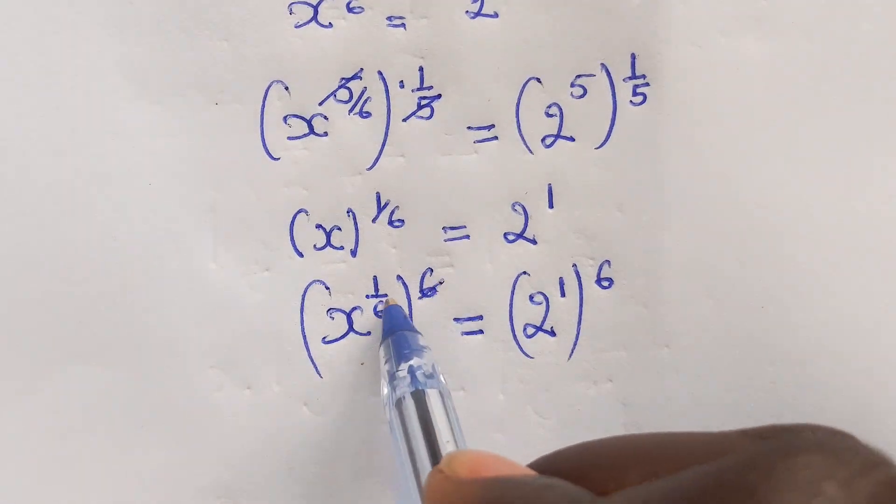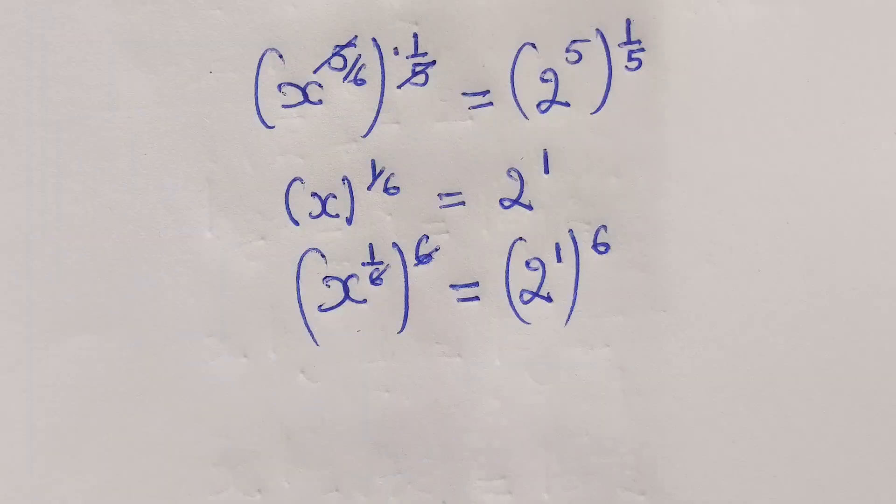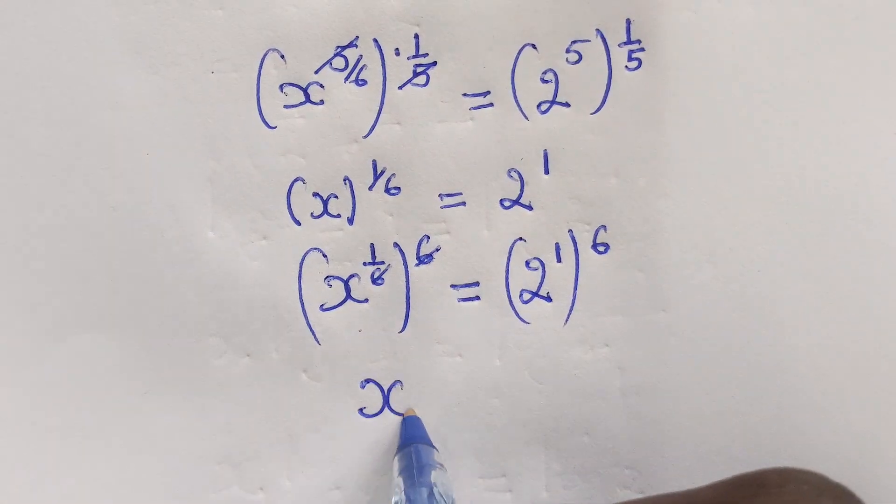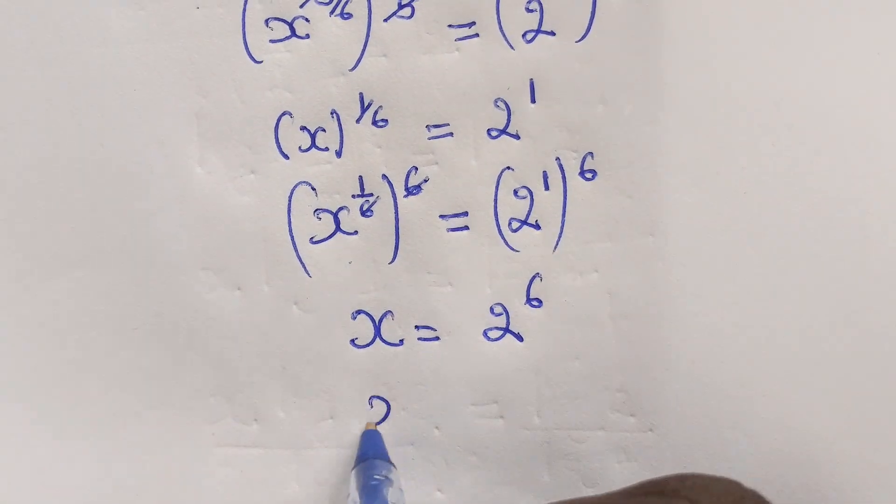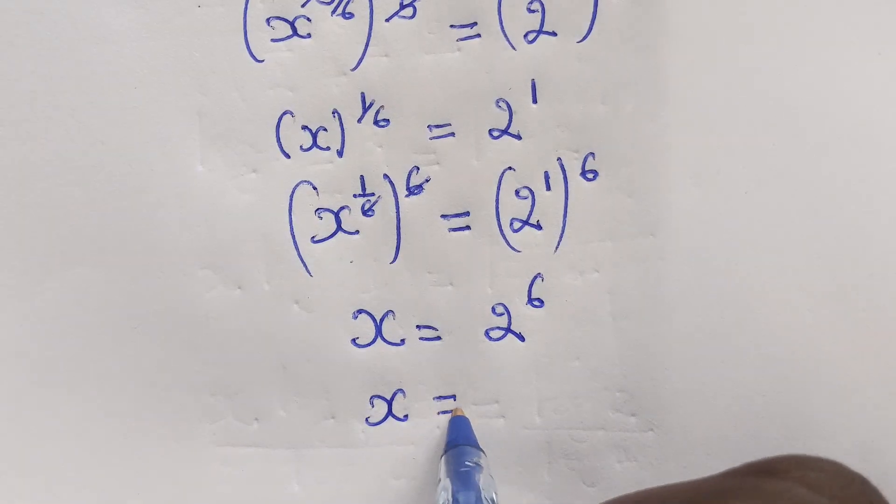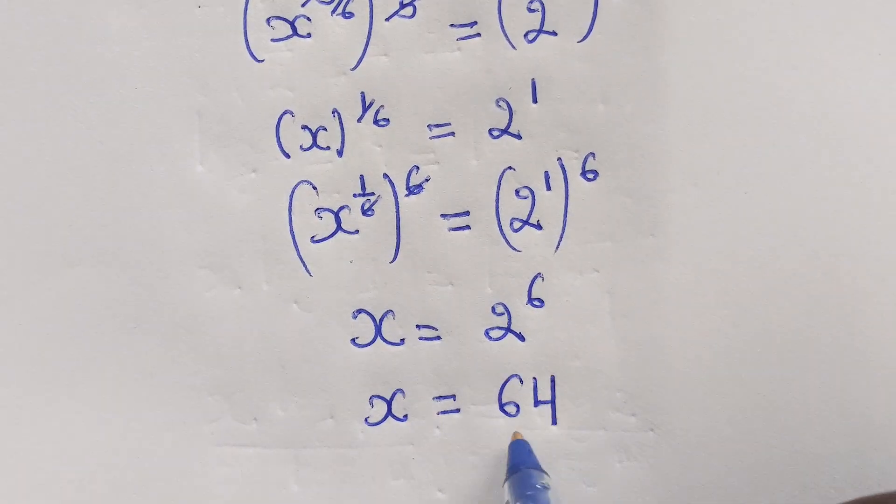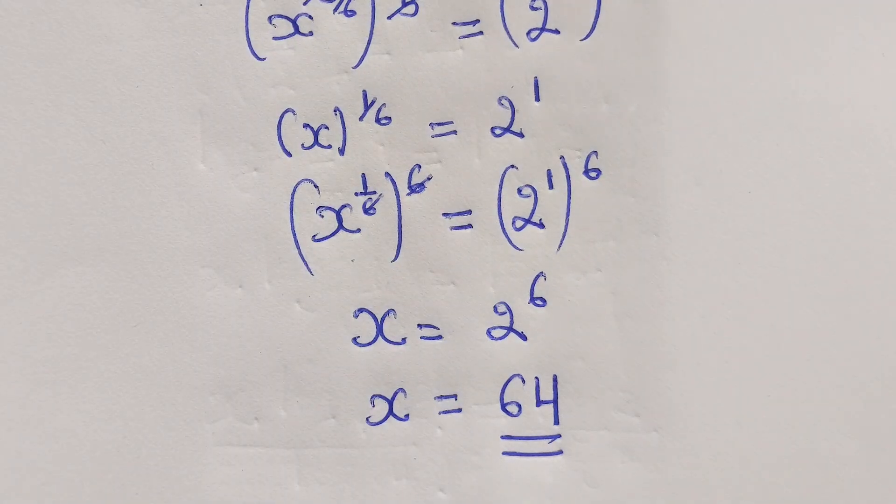This 6 will be simplified to get x equal to 2 power 6. At this stage, our x will be 64. Understand?